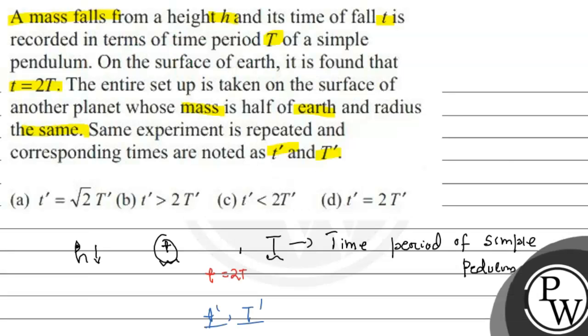because acceleration due to gravity cancels out when taking the ratio. That implies t dash by capital T dash equals small t by capital T, and small t by capital T equals 2.